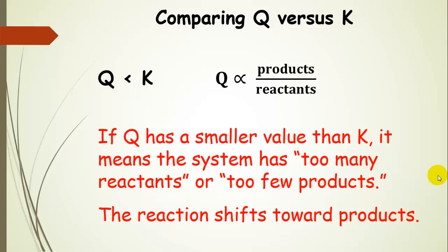Let's just talk about that a little bit more. So if Q is less than K, and remember, it's products over reactants, then that means there are either too many reactants, this number is too large, so that's going to make this number smaller than K, or this number is too small.